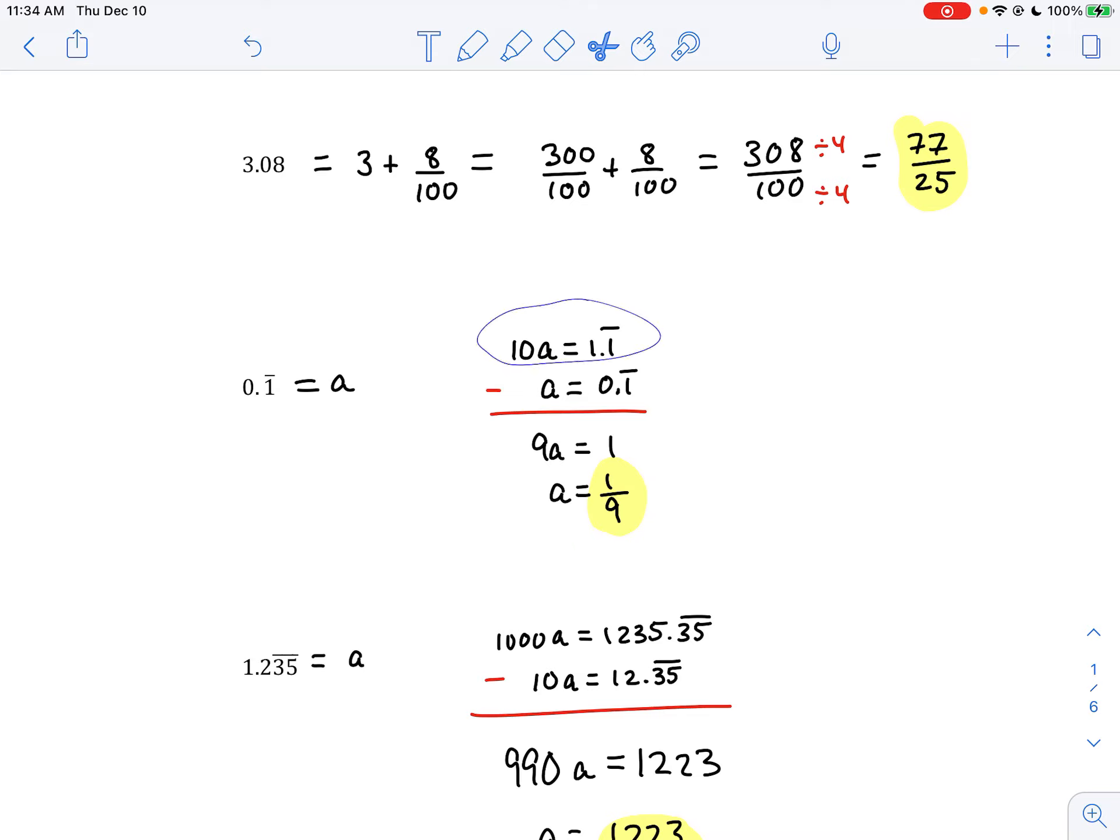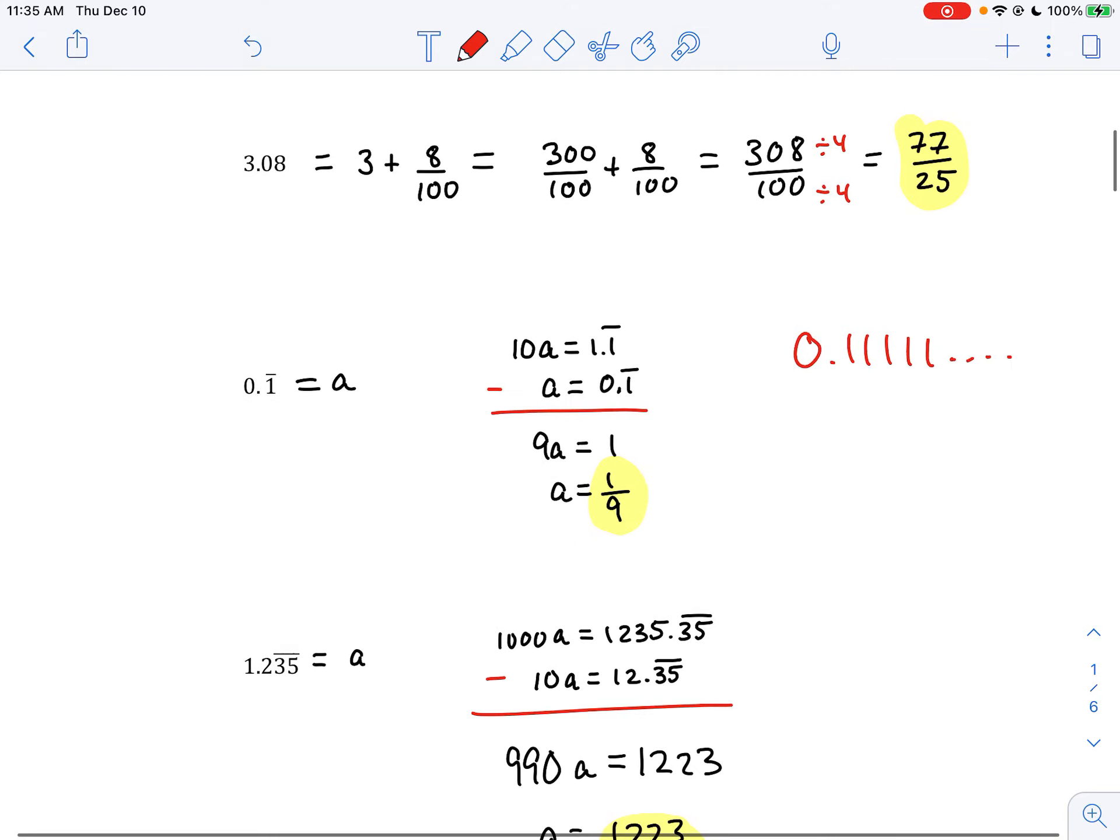And so when you have a repeating decimal, and also the bar, a lot of people didn't notice that there was a bar here and a bar here. So when you see 0.1 repeating, this really means 0.1 and then just 1 forever. If you call that a, and you multiply a by 10, you get 1.1 repeating forever. And then you remove a from that, which is the 0.1 repeating. So you get 9a equals 1, because the 0.1 repeating cancels. And you solve for a, you get 1 ninth.